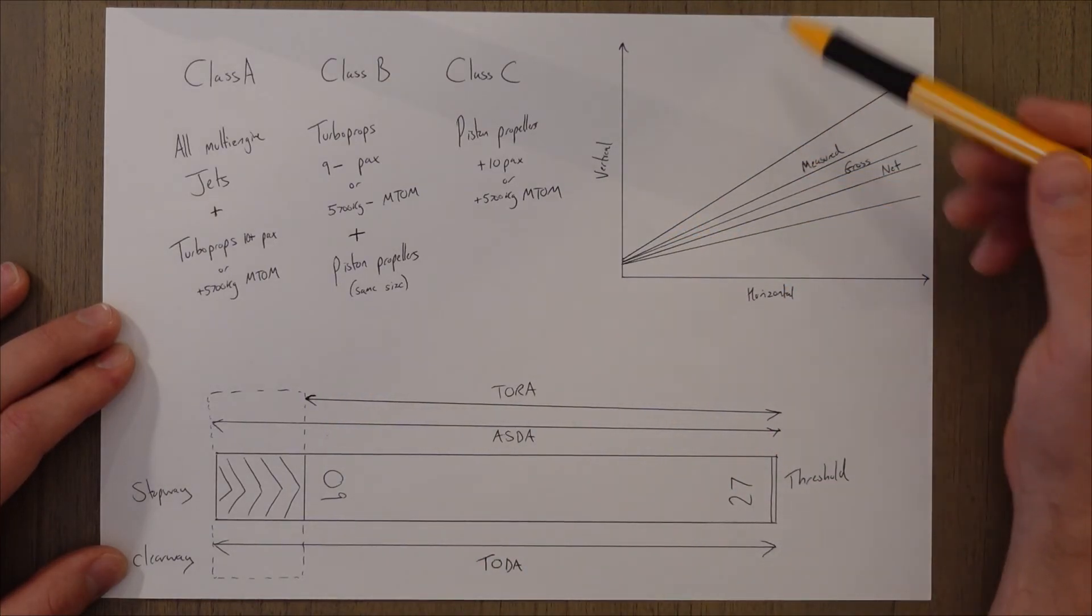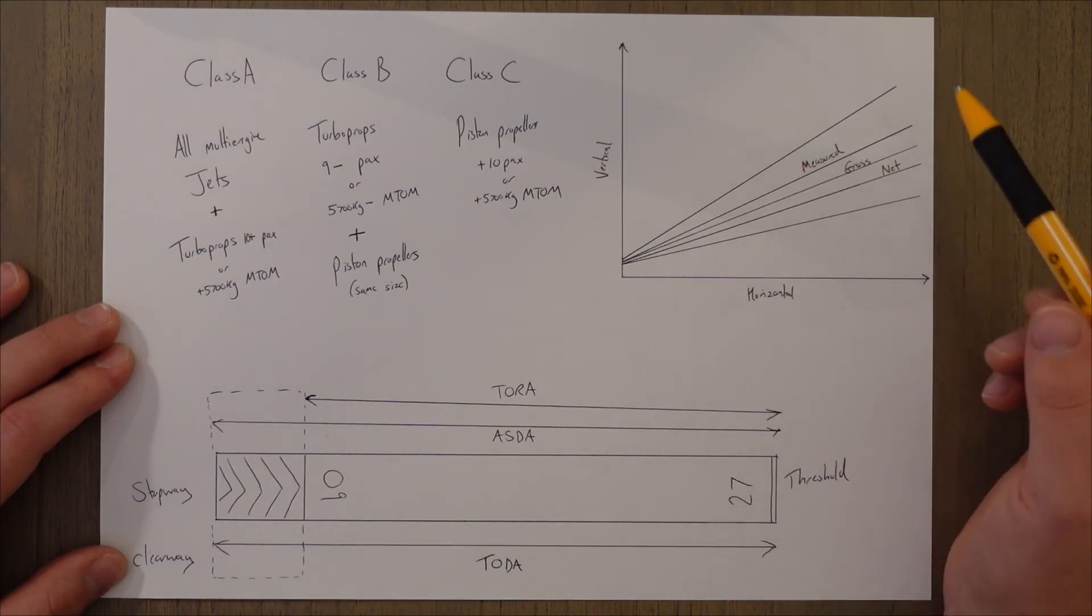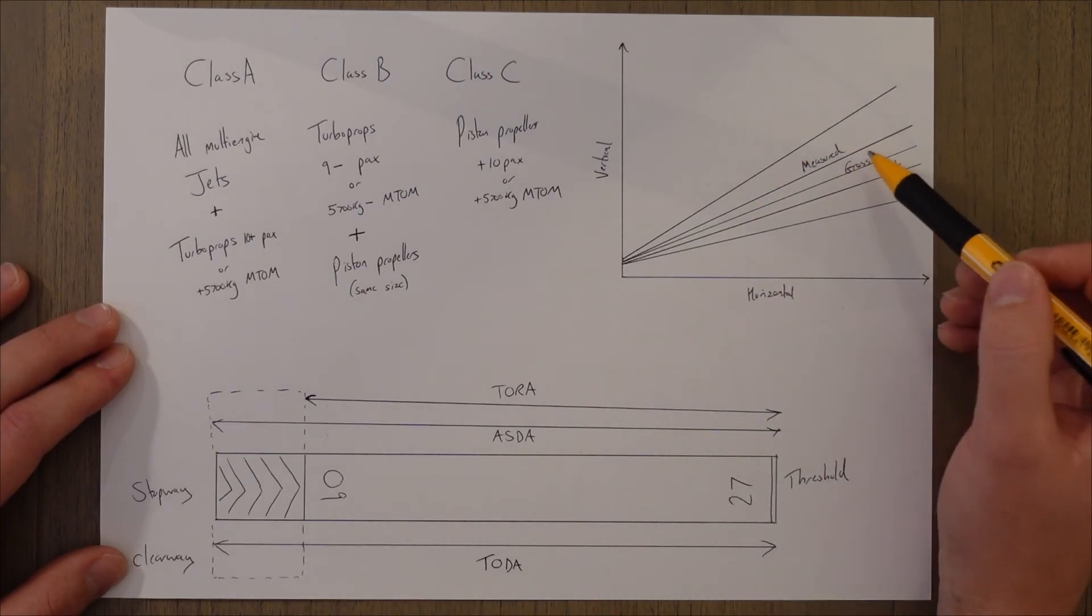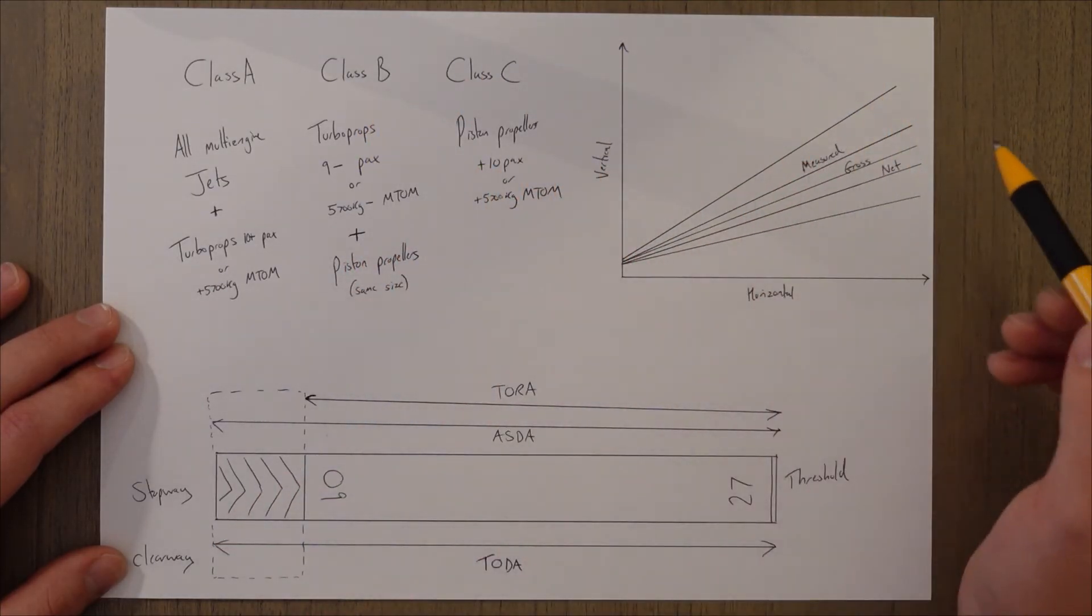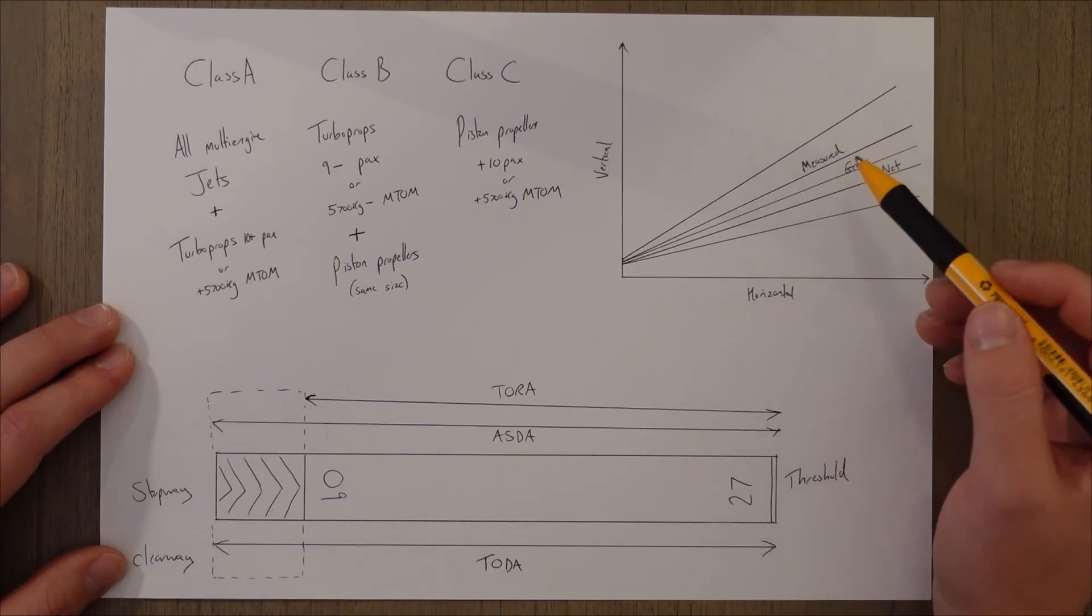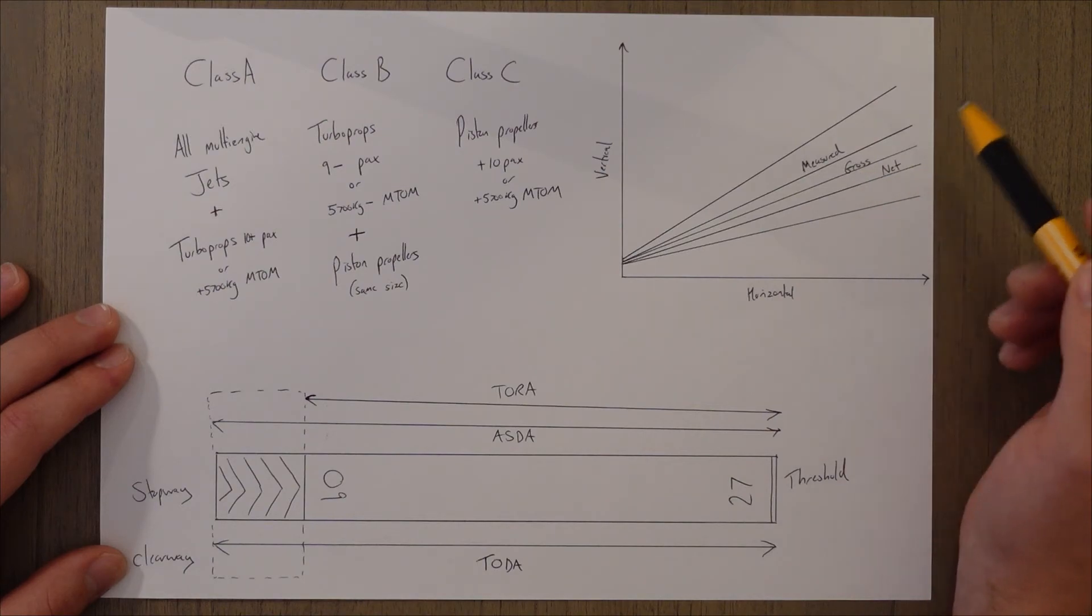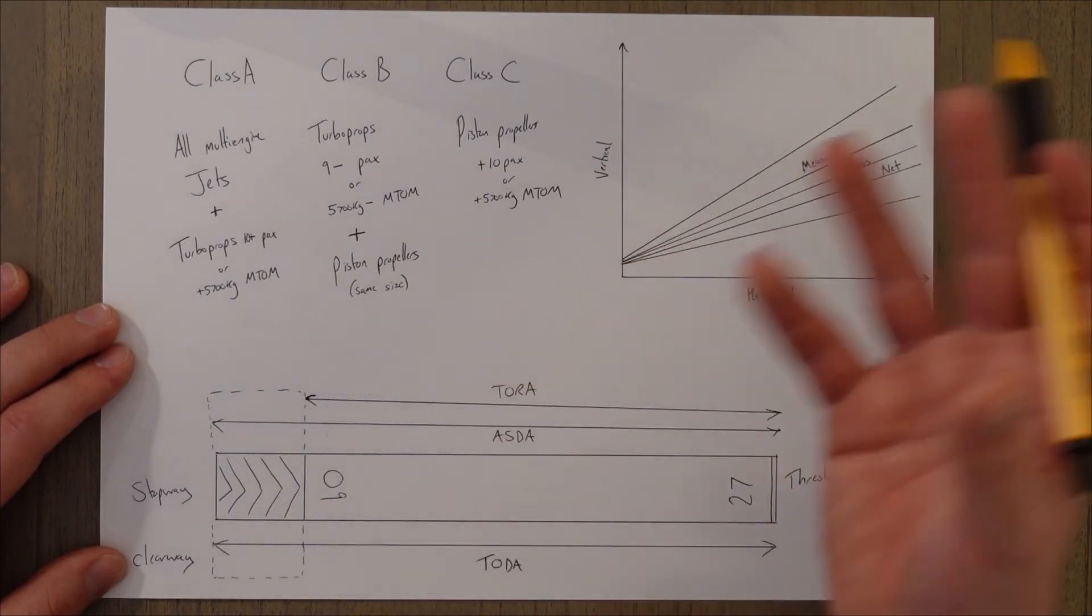We classify all of our various performance characteristics into measured, gross, and net performance. Measured is measured just out of the factory, flown by test pilots on a brand new aircraft. Gross is average aircraft, average pilot, average day, and 50 percent of the time we're going to perform worse than that, 50 percent we're going to perform better than that. And if we apply a little bit of a safety factor to account for this 50 percent worse performance, then we get the net performance. And the size of the safety factor varies depending on various conditions, which we'll see throughout the course.